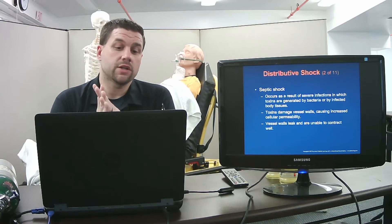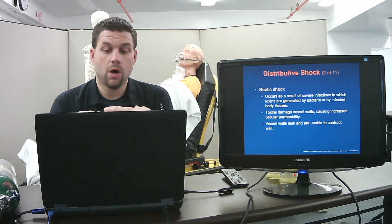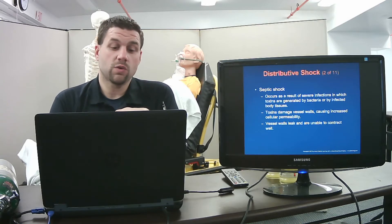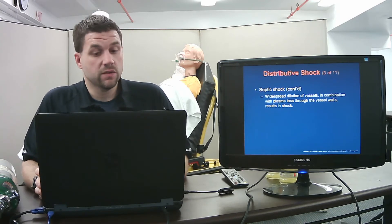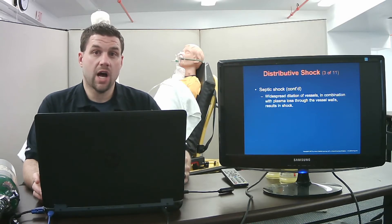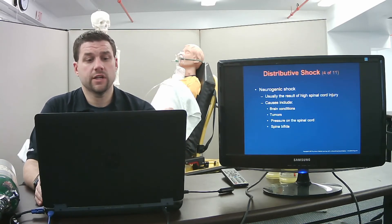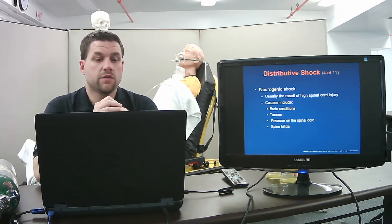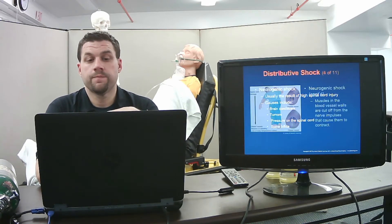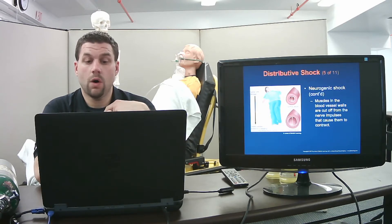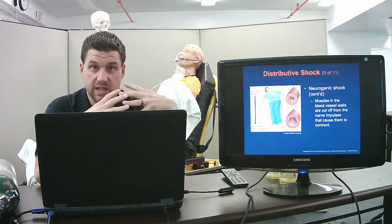Septic shock occurs as a result of severe infection where toxins are generated by bacteria or infected tissues. These toxins damage the vessel walls, causing increased cellular permeability — the vessel walls leak and can't contract well, resulting in widespread dilation and plasma loss. Neurogenic shock is usually the result of a high spinal cord injury — the muscles in the blood vessel walls are cut off from nerve impulses that cause them to contract normally.